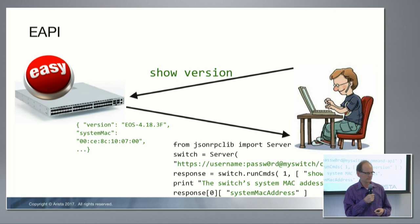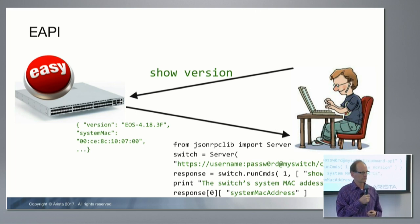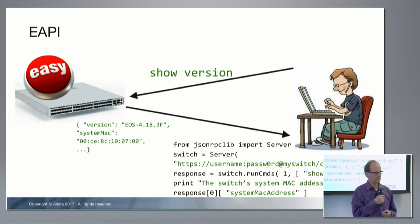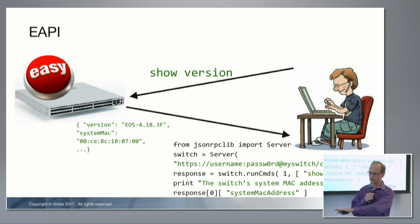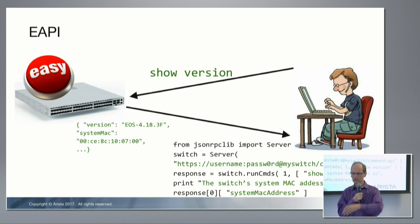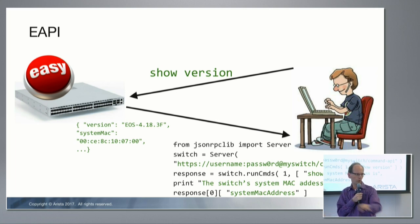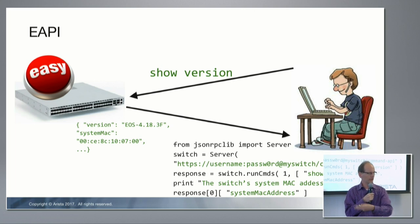Question: Can you use eAPI with config sessions so that you get rollback if you do something wrong? Yes, absolutely. You can have a whole series of commands — it's a vector of character string commands — you can enter a session, run a bunch of commands, then commit or roll back.